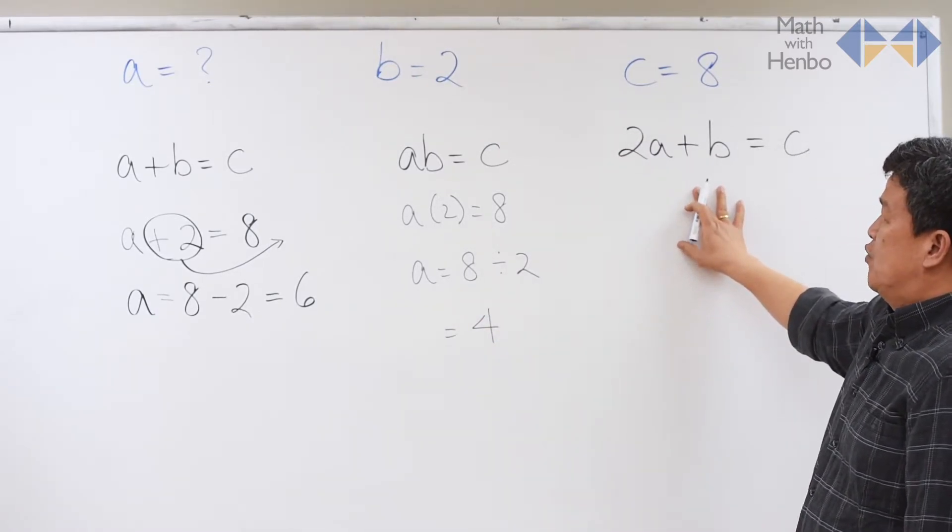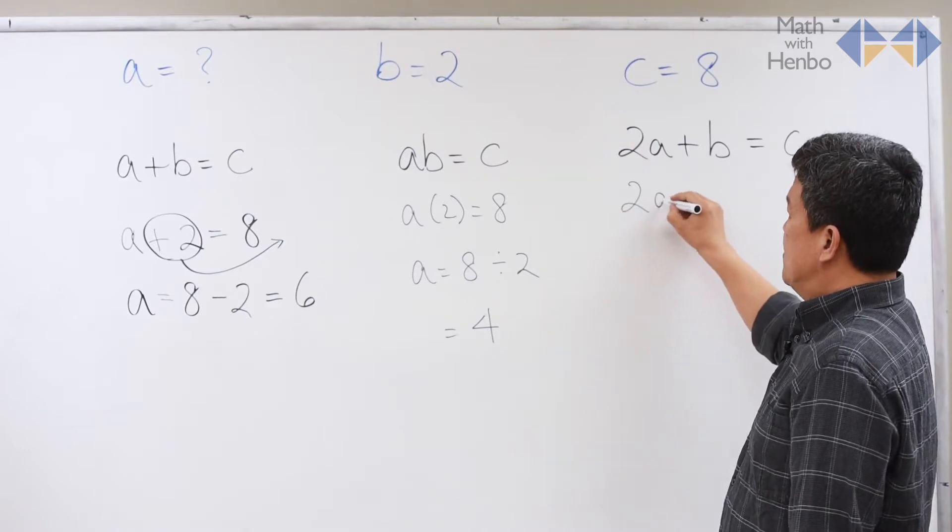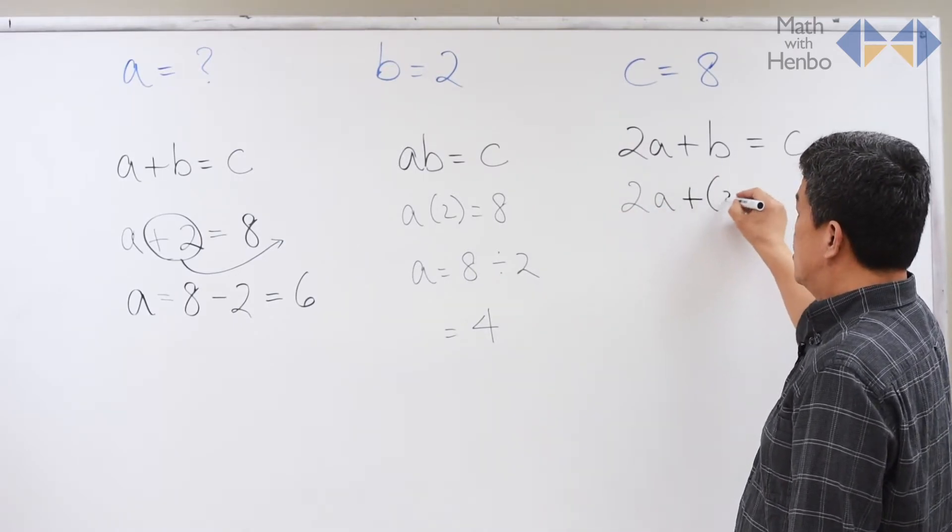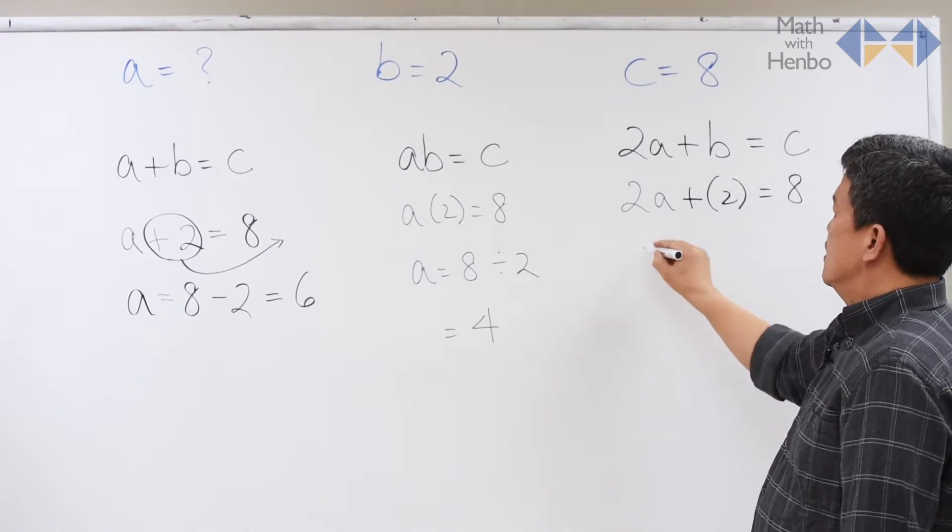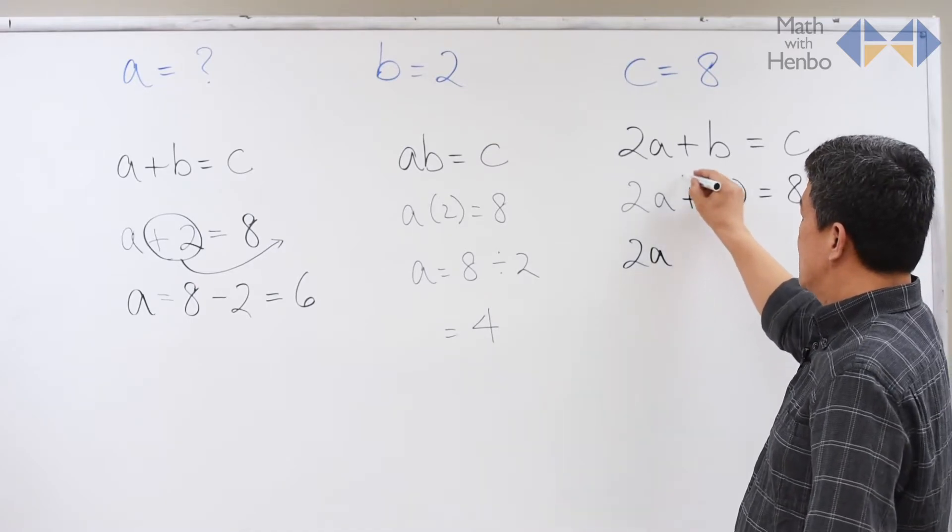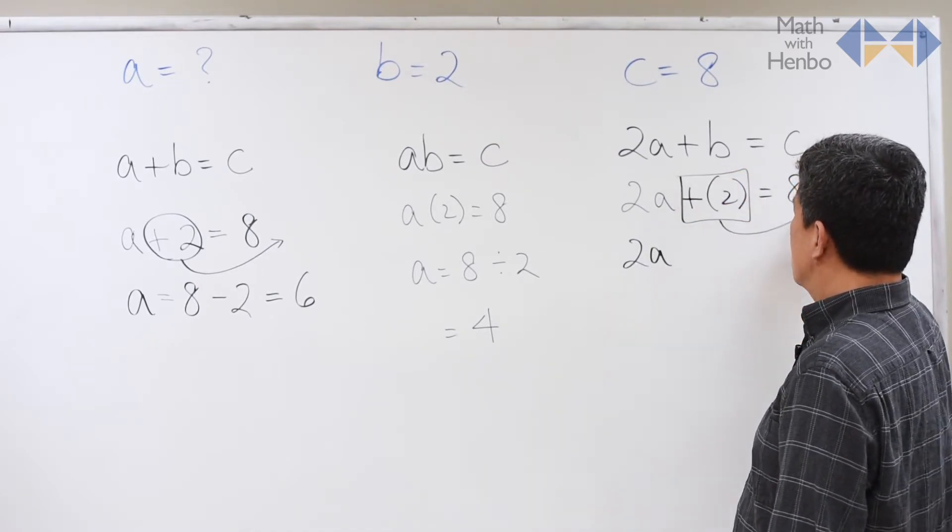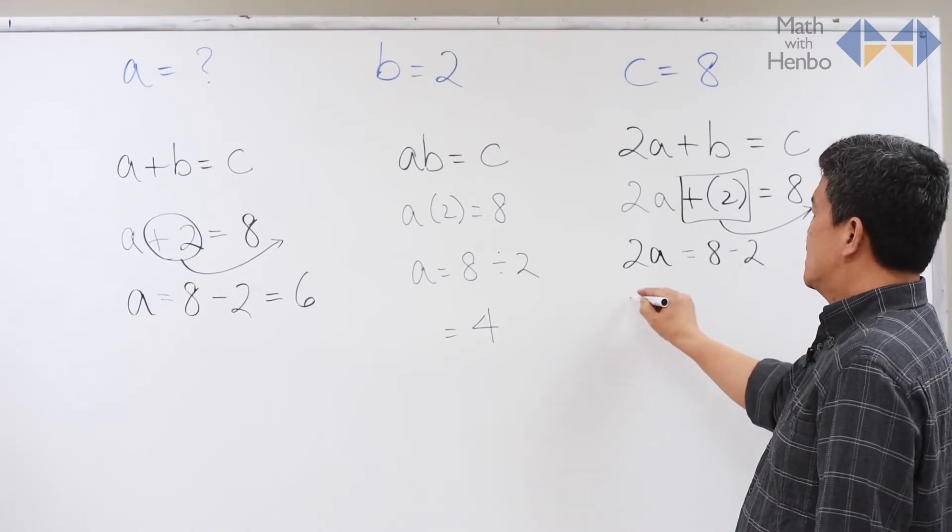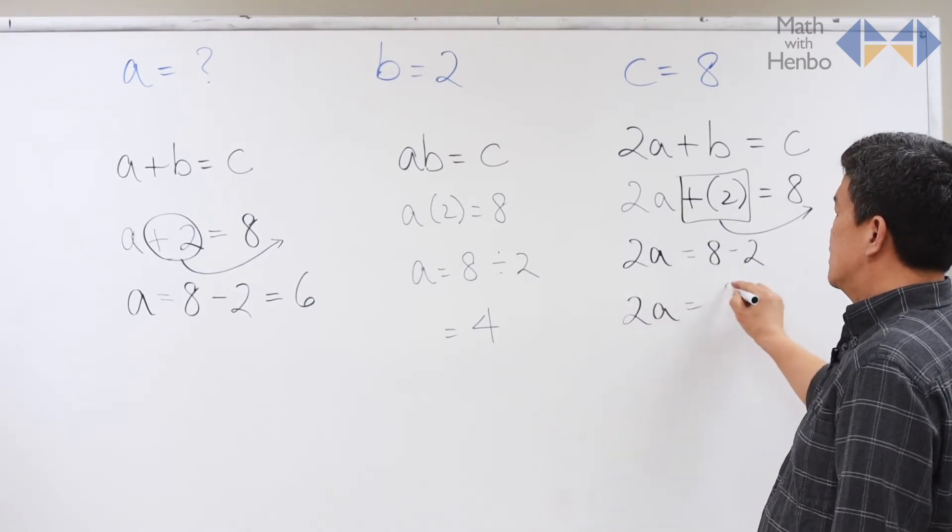For the third situation, 2 times A is partnered. So just substitute B, which is 2, and C, which is 8. So here, isolate 2A because we can't do anything else. Take 2 across first equals 8 minus 2. So this gives us 2A equals 6.